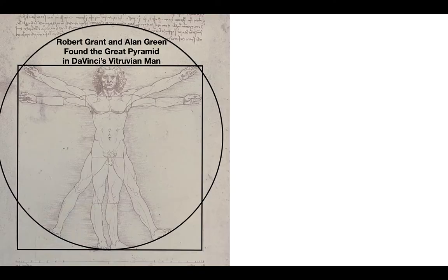You need to follow Robert Grant and Alan Green on Instagram, Facebook, and YouTube. Do a search for them. I'll leave it in the description. But they found the Great Pyramid in Da Vinci's Vitruvian Man.